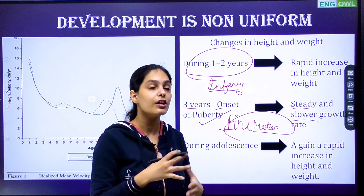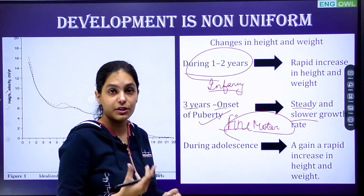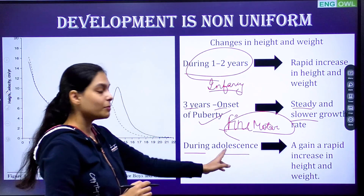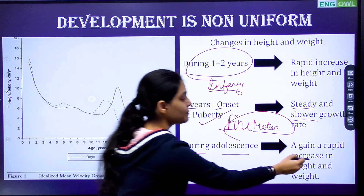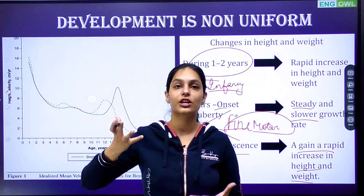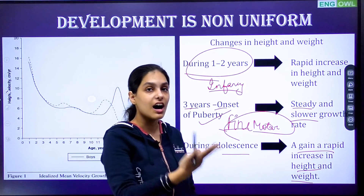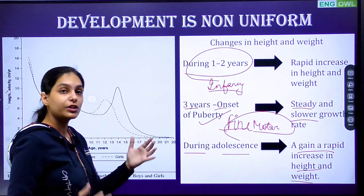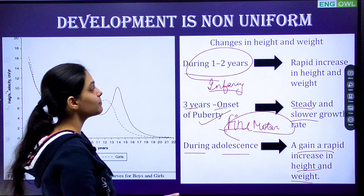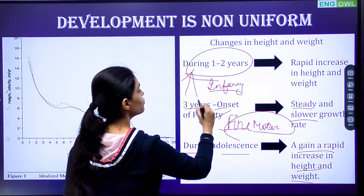In adolescence, we observe a rapid spurt in height and weight — meaning both things develop quickly. Girls' height increases, reproductive organs develop, external organs develop, and the voice changes. The whole pattern is not uniform — at one age growth is rapid, then it slows, then it increases again. So development is non-uniform.